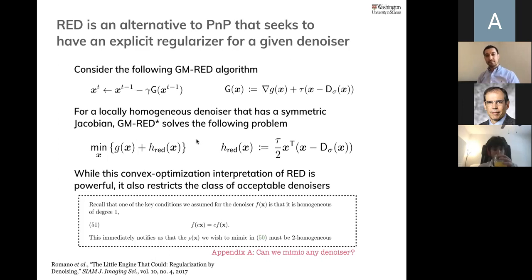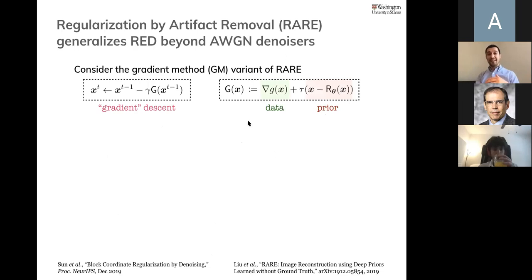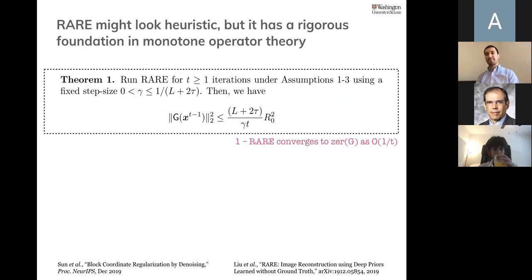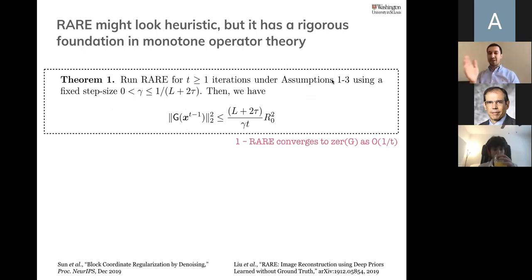Did you use local homogeneity in your work? No, I completely abandoned that. My denoiser is a general neural network, and the only thing I impose is that it's non-expansive — meaning the Lipschitz constant of the neural network is bounded by one. There's currently a lot of interest in training neural networks with bounded Lipschitz constants, related to privacy-preserving neural networks, and we can leverage all that to train a neural network with a bounded Lipschitz constant.